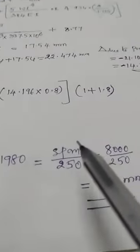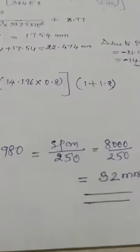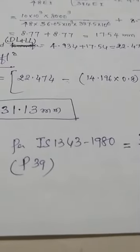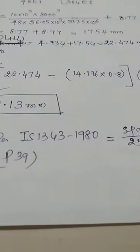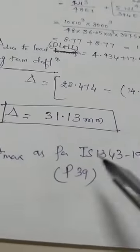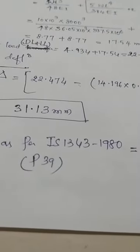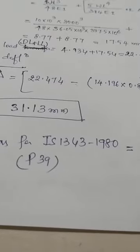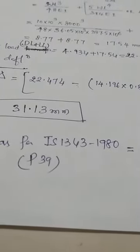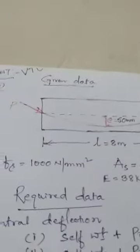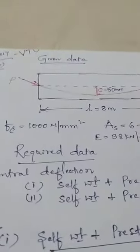As per IS 1343:1980, deflection should be restricted to span/250, which is 8000/250 = 32 mm. The deflection developed is 31.13 mm, which is well within the limit. Even if the deflection were more, since this is not a design problem — we are simply checking whether the deflection developed is within the limit or not — we just comment that it is within the limit.